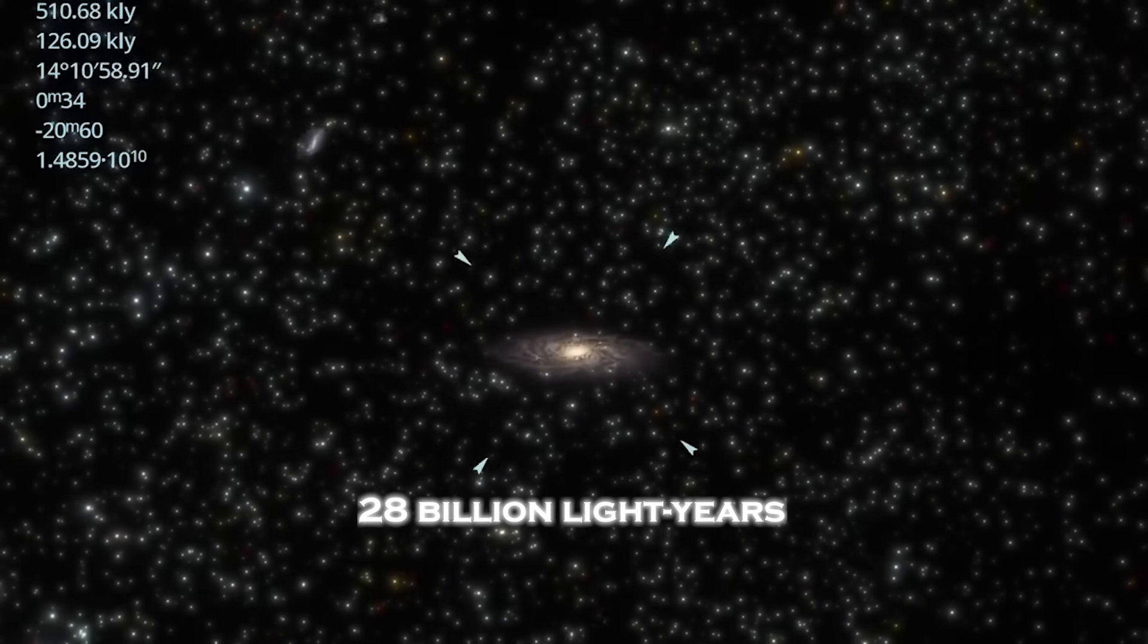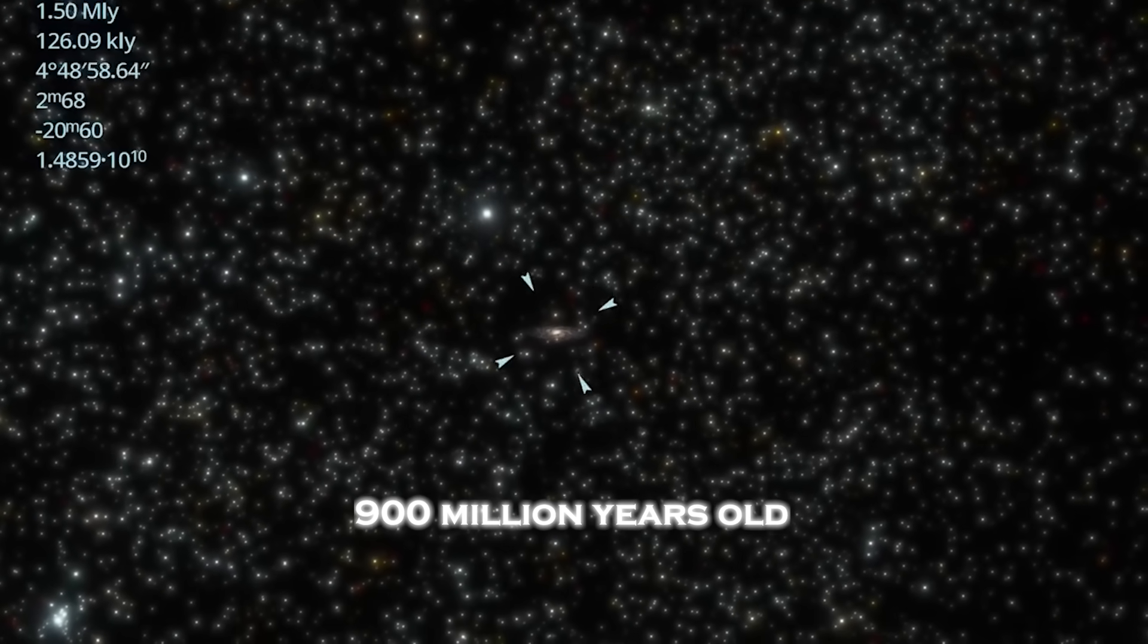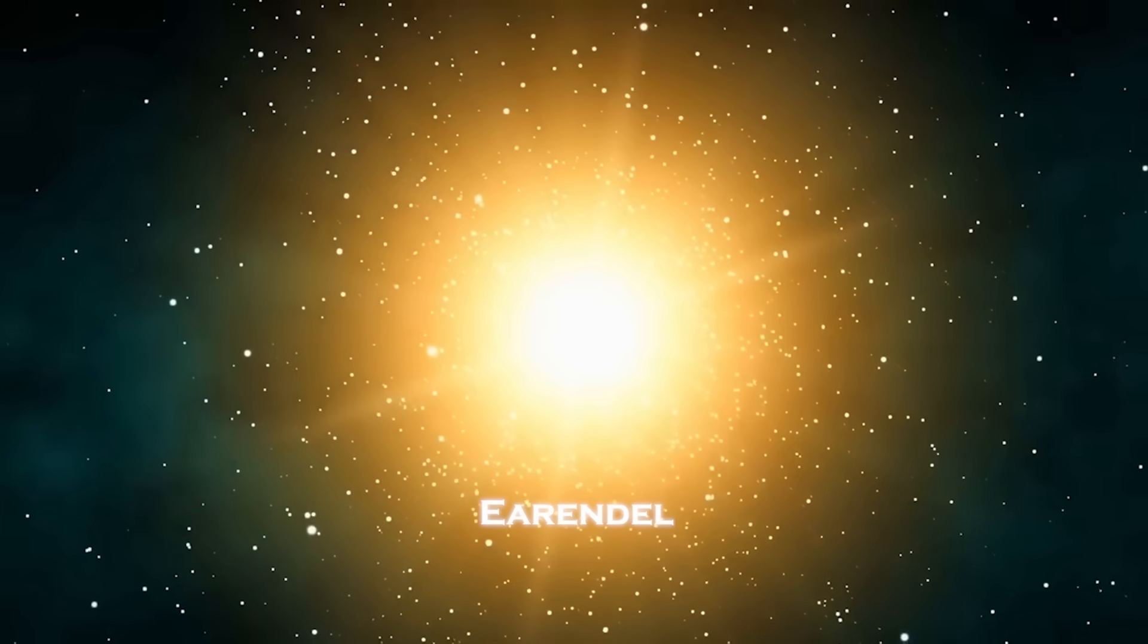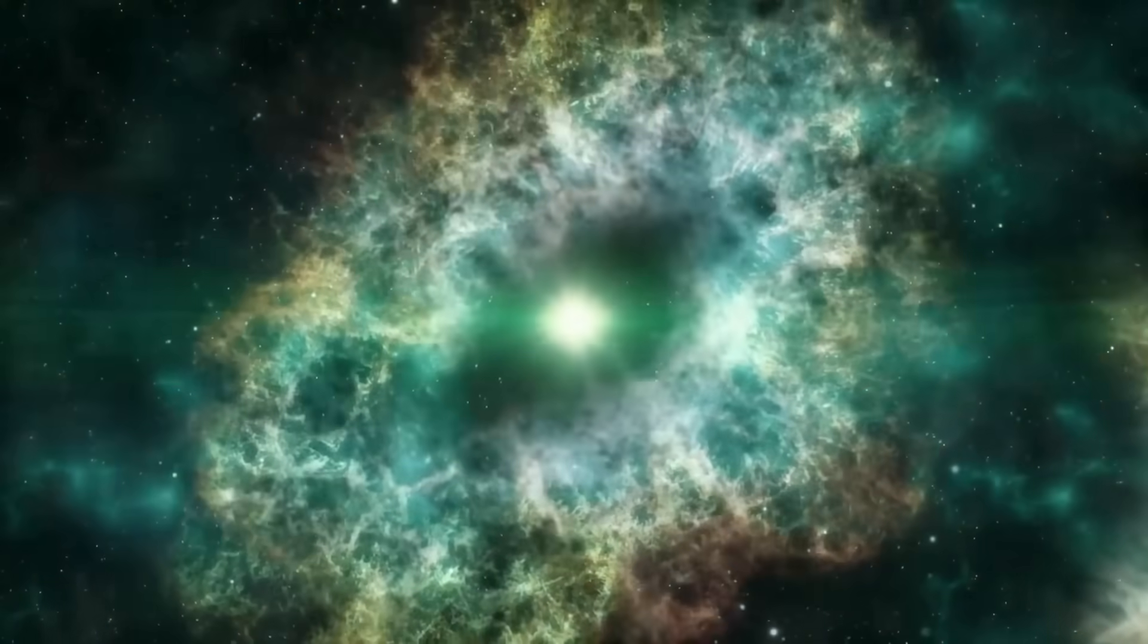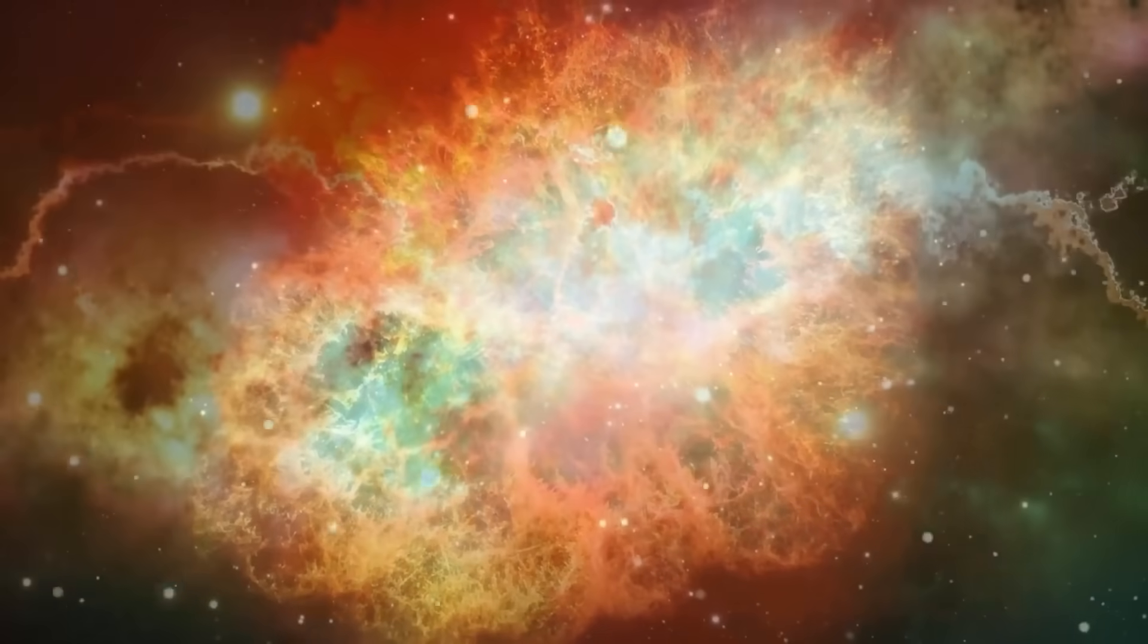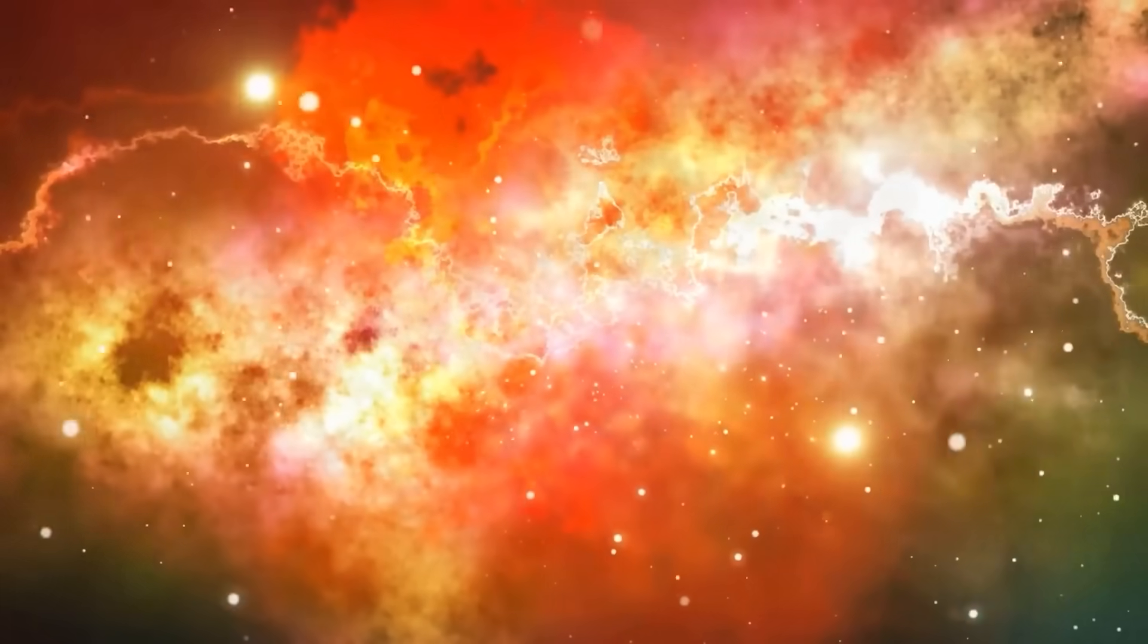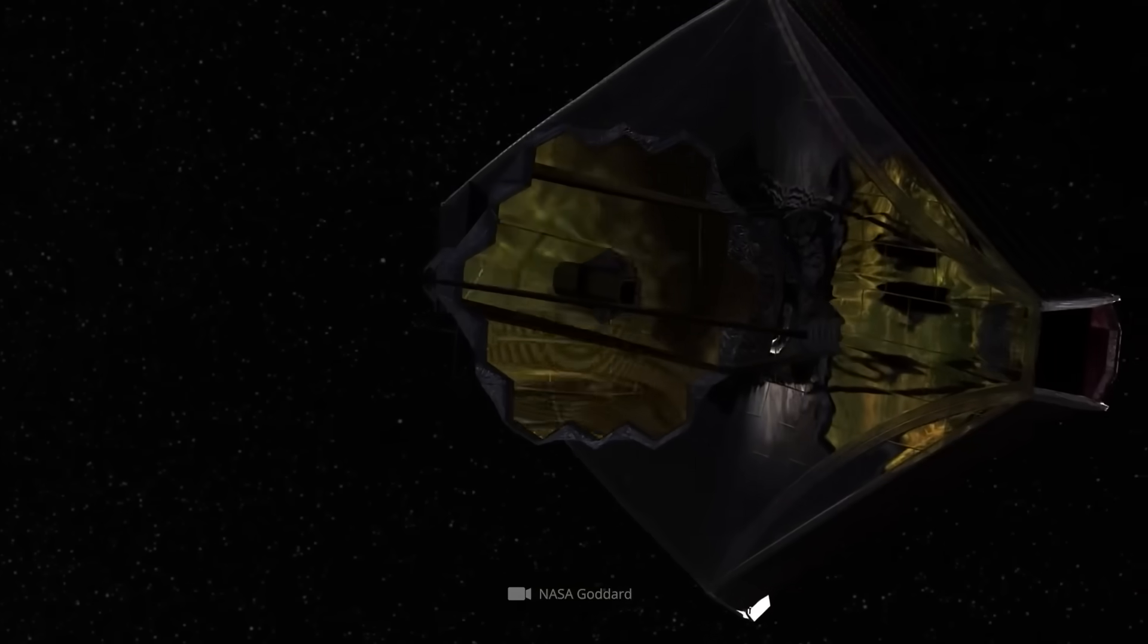At a distance of more than 28 billion light-years, from a time when the universe was barely 900 million years old, shines Earendel, the farthest star ever observed by humanity. Its very detection is a miracle of physics and technology, made possible by a rare alignment of galaxies that acted as a gravitational lens, bending and magnifying its light by a factor of over 4,000. Without this cosmic coincidence, even Webb's incredible sensitivity wouldn't have been enough to see it.